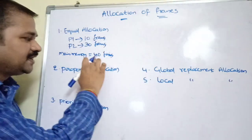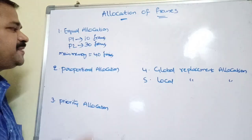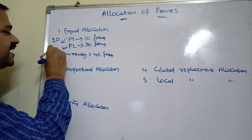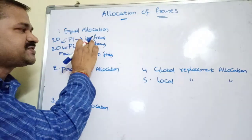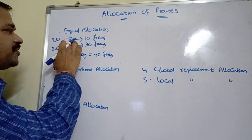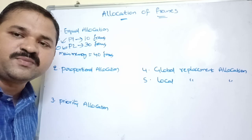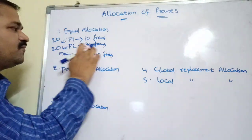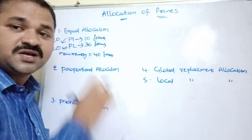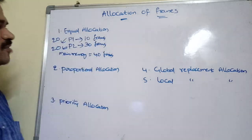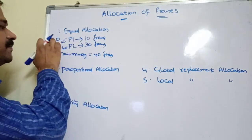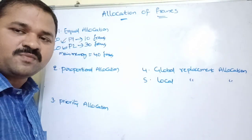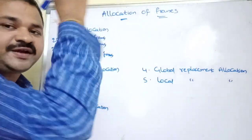In equal allocation, the 40 frames are distributed equally between P1 and P2: 40 divided by 2 equals 20. So 20 frames are allocated for each process. Process P1 actually requires only 10 frames but gets 20, so 10 frames are wasted. Process P2 requires 30 frames but gets only 20, so it is still short by 10 frames.